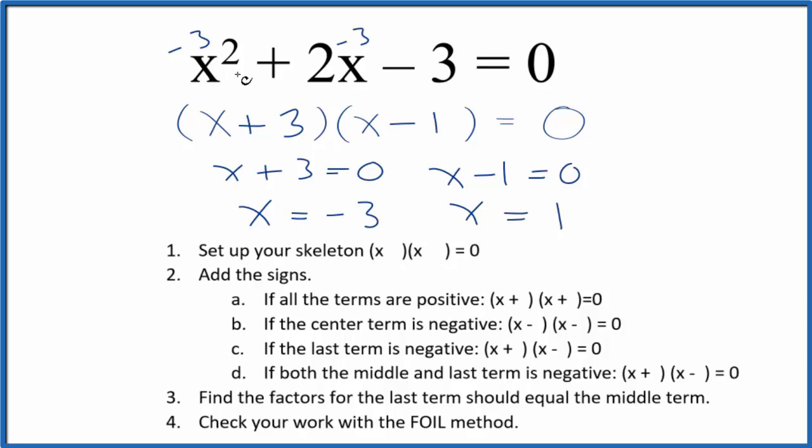This is Dr. B factoring x squared plus 2x minus 3 equals 0. So, thanks for watching.